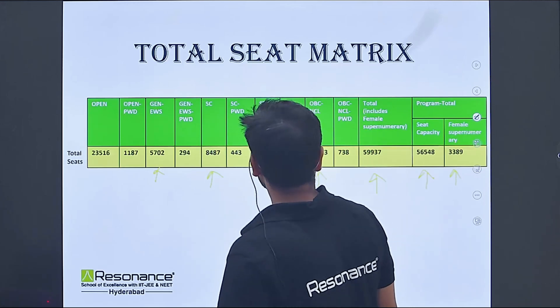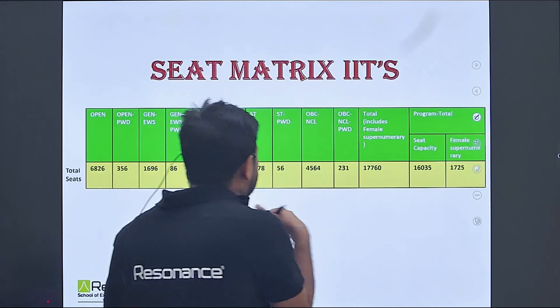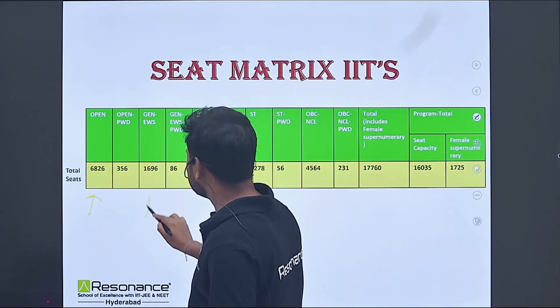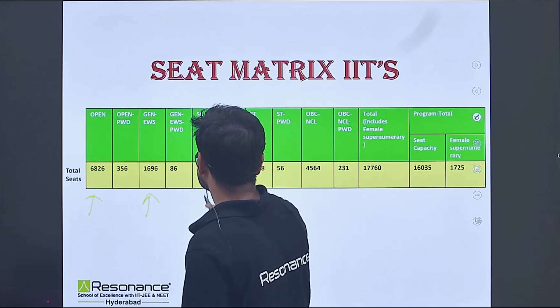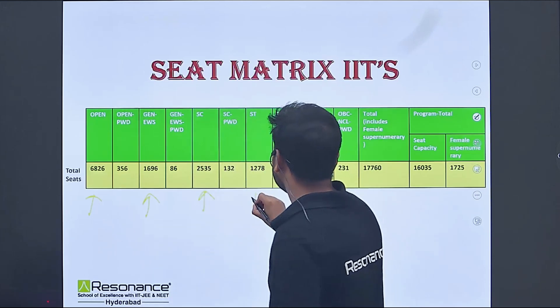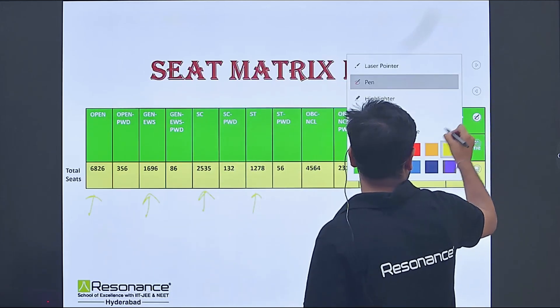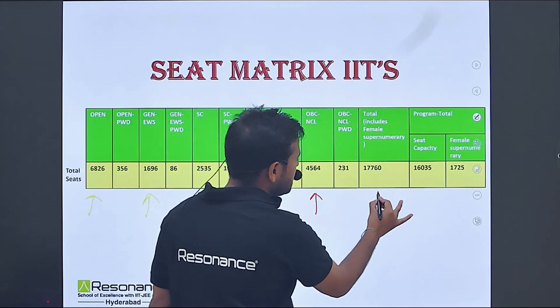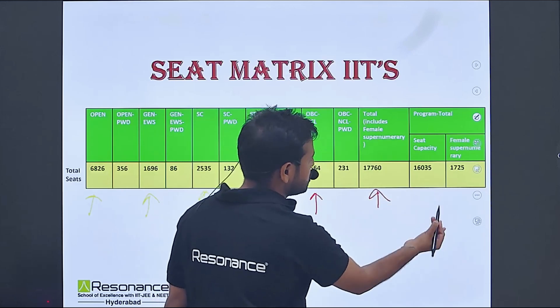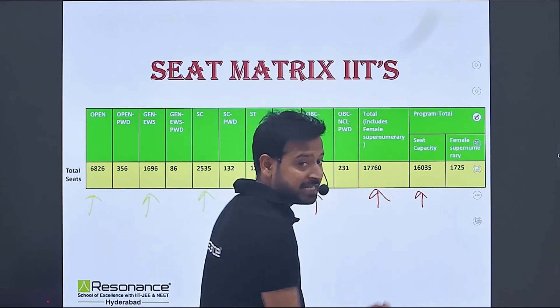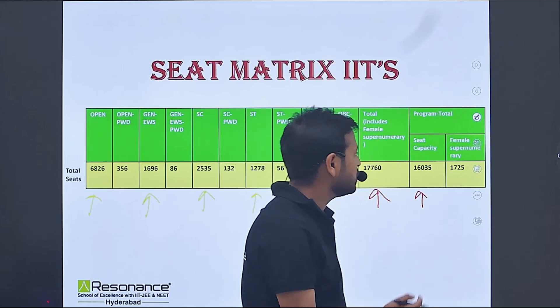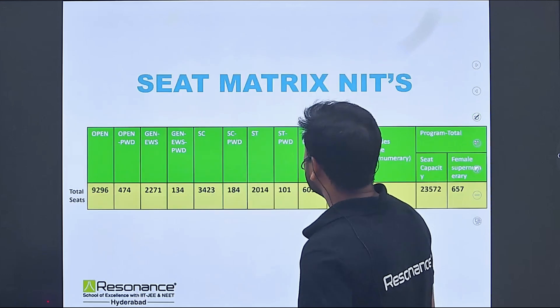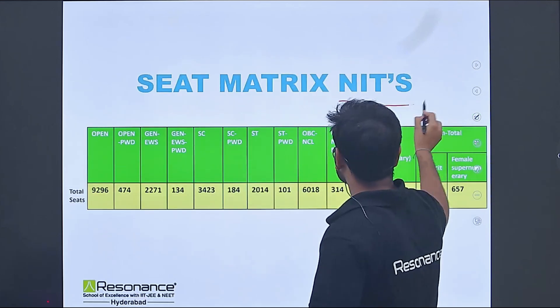For IITs only, we have open category 6826, general EWS 1696, SC 2535, ST 1278, OBC NCL 4564, total including female supernumerary 17760. Program total seat capacity in IITs currently is 16035 and female supernumerary 1725.